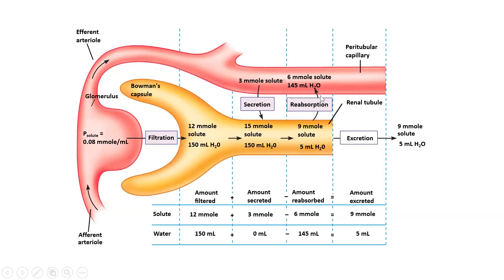After reabsorption takes place, we end up with an osmolarity of nine millimoles, because six millimoles of particles were reabsorbed back into the blood. We subtract out that six millimoles and we're left with nine millimoles — that is our excretion rate, what remains in the tubular fluid after adding secreted particles and subtracting reabsorbed particles.